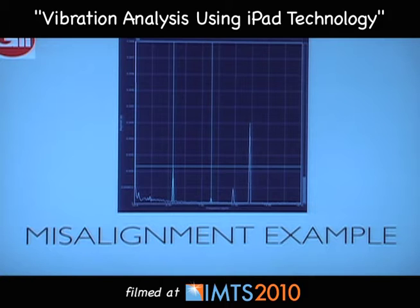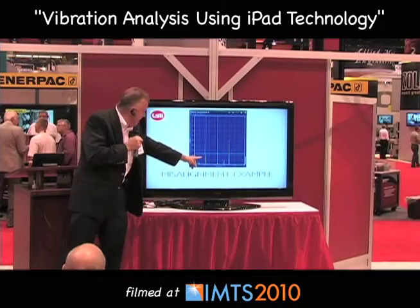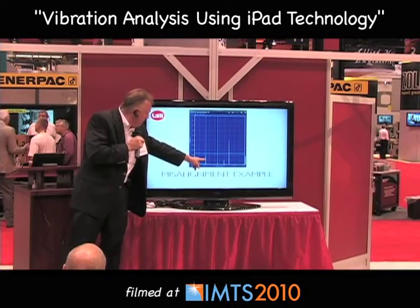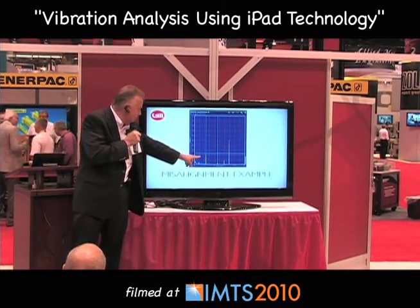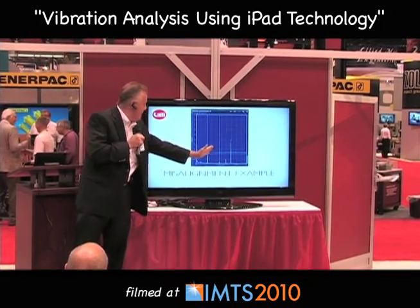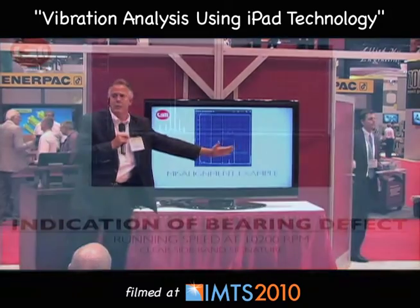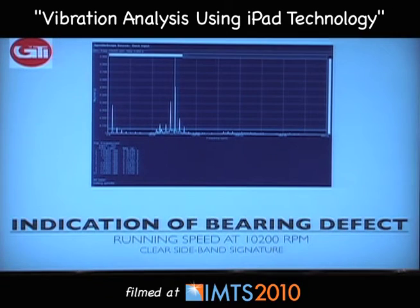One of the major functions is the cursors — you can place as many as needed. When you're looking for multiples of running speed, which point out misalignment and looseness, you put your finger on the cursor — because it's all touch technology — and the other cursors will line up and automatically calculate the multiples of running speed for you.